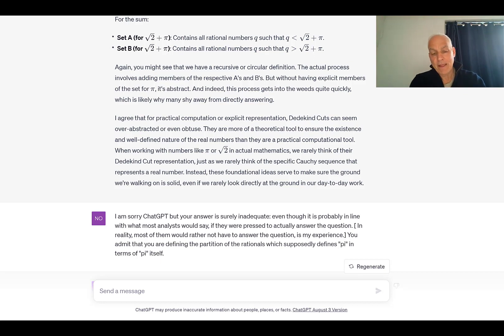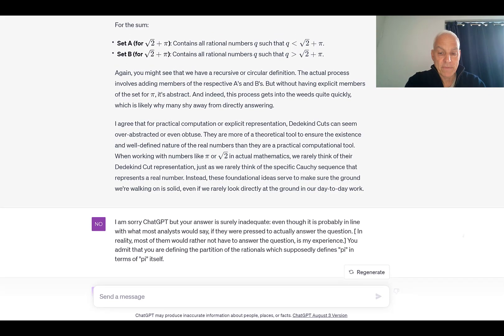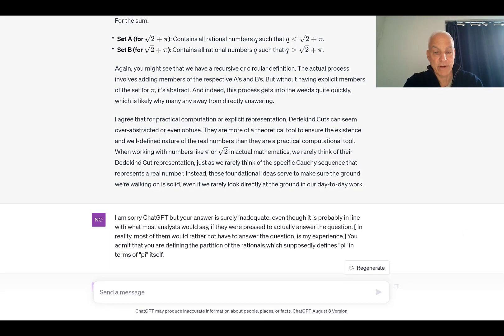Anyway, again, you might see that we have a recursive or circular definition. The actual process involves adding members of the respective A's and B's, but without having explicit members of the set for pi, it's abstract. And indeed, this process gets into the weeds quite quickly, which is likely why many shy away from directly answering. I agree that for practical computation or explicit representation, Dedekind cuts can seem over abstracted or even obtuse. They are more of a theoretical tool to ensure the existence and well-defined nature of the real numbers than they are a practical computational tool. When working with numbers like pi or root 2 in actual mathematics, we rarely think of their Dedekind cut representation, just as we rarely think of the specific Cauchy sequence that represents a real number. Instead, these foundational ideas serve to make sure the ground we're walking on is solid, even if we rarely look directly at the ground in our day-to-day work.